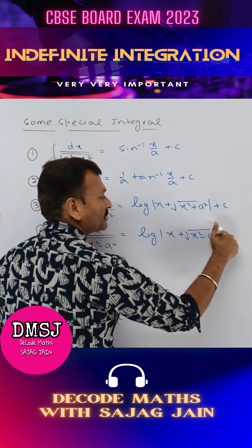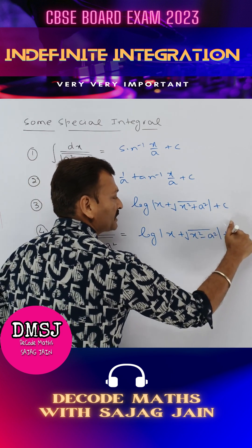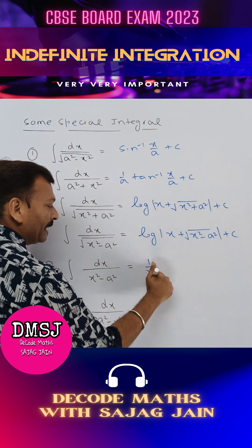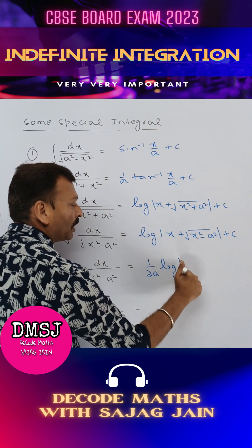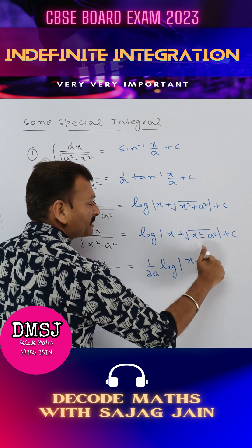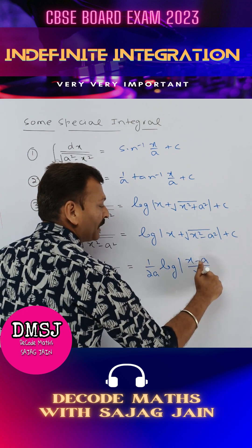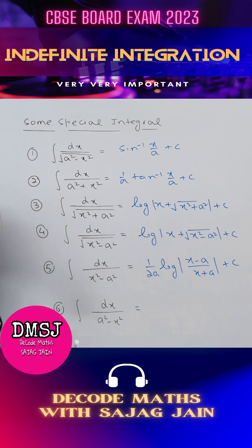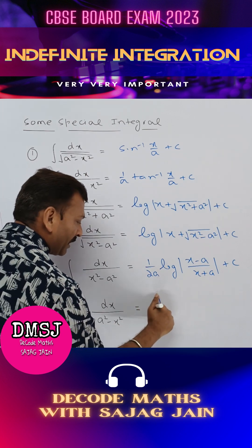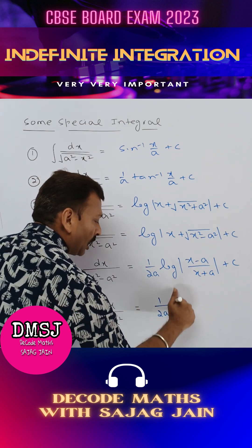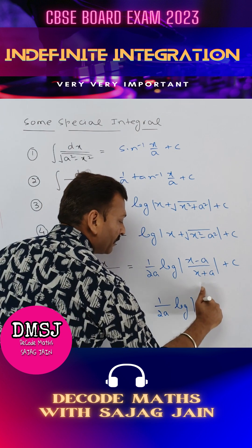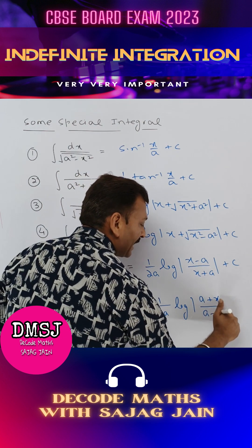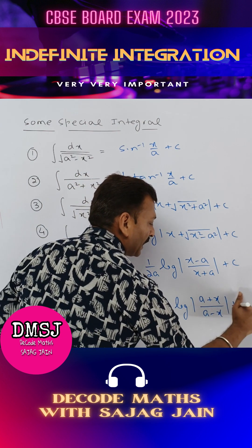dx upon x square minus a square equals 1 upon 2a log modulus of x minus a upon x plus a plus c. dx upon a square minus x square equals 1 upon 2a log modulus of a plus x upon a minus x plus c.